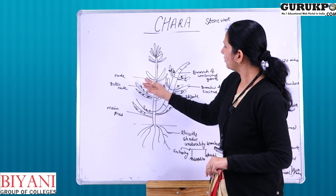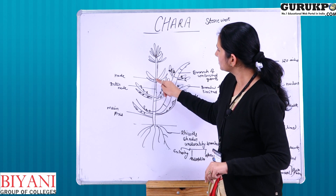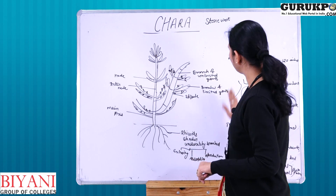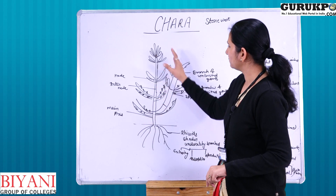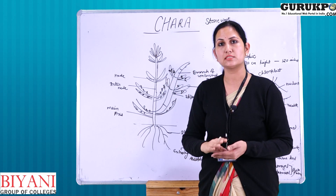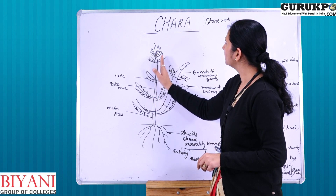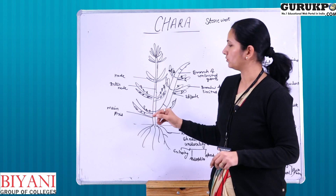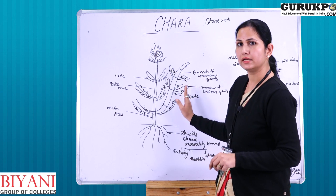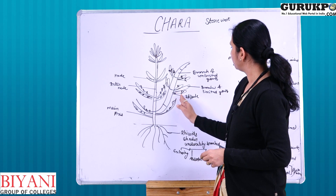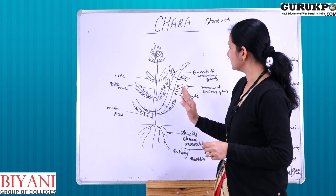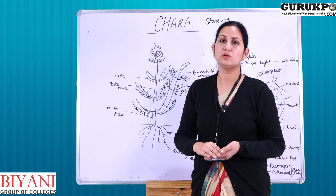The main axis is divided into nodes and internodes. The portion bearing leaf-like structures is known as the node, and the median portion between two nodes is the internode. The plant has two kinds of branches: branches of limited growth and branches of unlimited growth. Branches of limited growth arise from branches of unlimited growth at the nodal region, where stipule-like structures are also present. From the axil of these stipules, branches arise, and the sex organs — globule and nucule — also arise here.